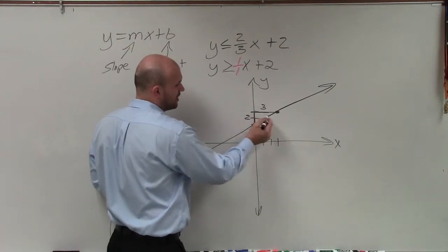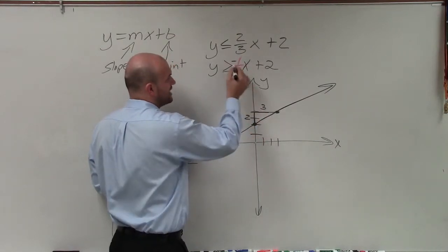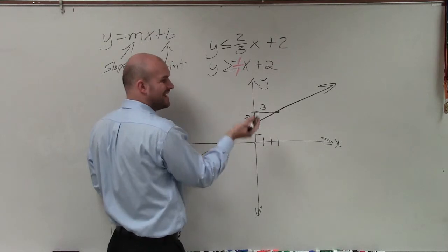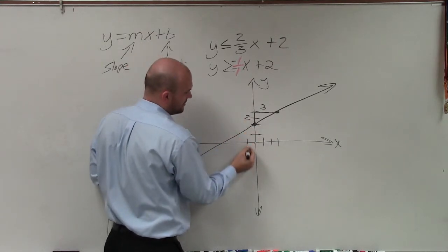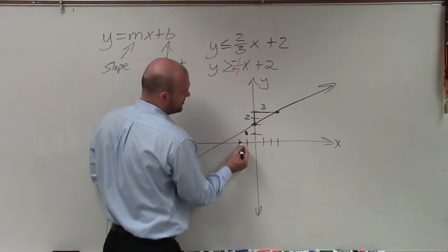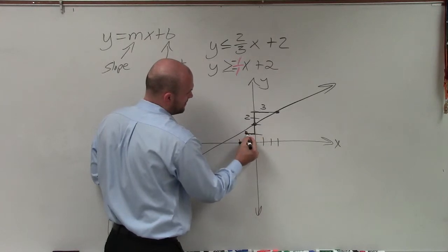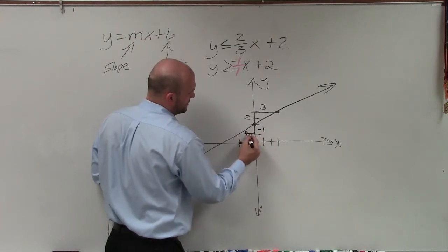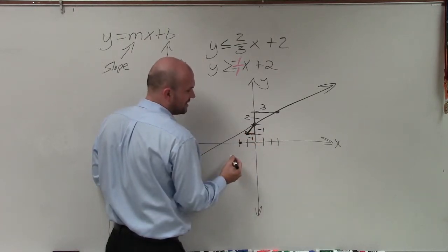But now this equation has a slope of 1 over 1, up 1. So I could go over 1, up 1. But to kind of show you, you could also go down 1 to the left 1, because a negative divided by negative is positive. So it would be down 1 to the left 1. Down 1 to the left 1. And you can see, by connecting here, negative 1, negative 1, they have slightly a different slope.